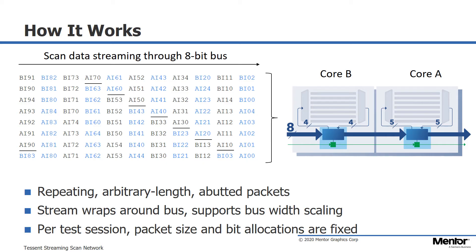Notice that the SSN bus width is 8 bits — remember that the width of the SSN bus is typically defined by the number of pins available for test, completely independent of the number of scan channels per core. On the left side of the slide, we see how data is streamed through the synchronous SSN bus. Looking at the first packet, to deliver all of the data corresponding to that packet we need two cycles. In the first SSN bus cycle, we deliver all five bits needed to perform one shift cycle for core A, and so after that first cycle we can shift core A.